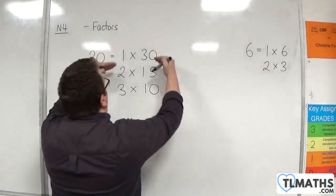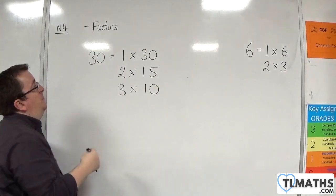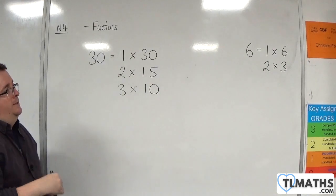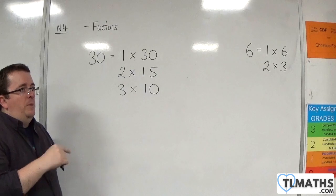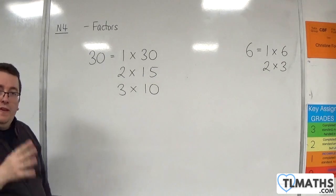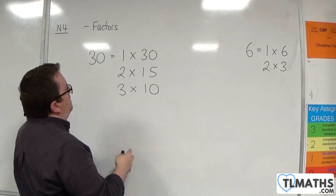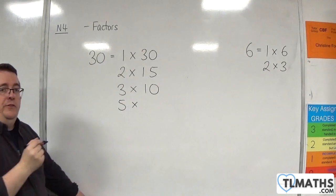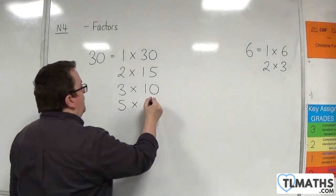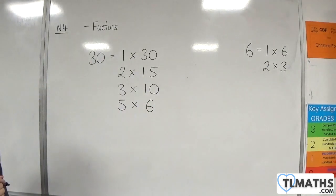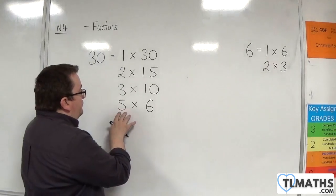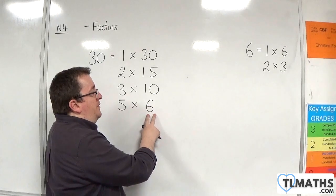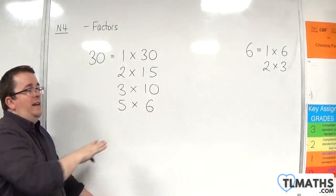We can keep going. The next integer would be 4. Does 4 go into 30? Well, 30 divided by 4 is 7.5, so that's no good. How about the next integer, 5? 5 goes into 30 6 times. 5 times 6 is 30. By that point, if I increase 5 up to the next integer 6, I'm just going back round now. There's no need to go any further.